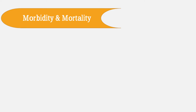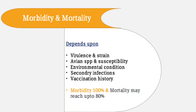Morbidity and mortality depend upon the virulence and strain of the organism, avian species and their susceptibility, environmental conditions (cold weather increases susceptibility), secondary infections, and vaccination history. In general, morbidity may reach 100% while mortality may reach up to 80% when birds are highly susceptible, secondary infections increase, and environmental conditions favor viral replication.